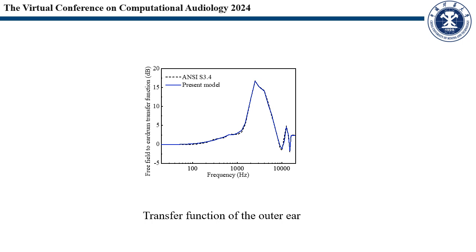The computational model of auditory periphery consists of an outer ear model, a middle ear model, and an inner ear model. The outer ear model is simulated by a 600-pole finite-plus filter. Its reliability is tested in comparison with the standard ANSI S3.4.